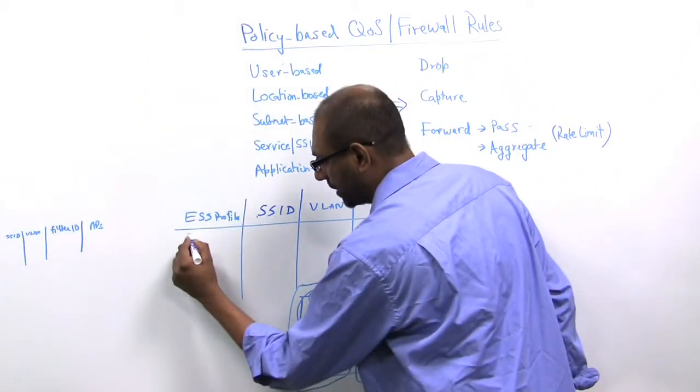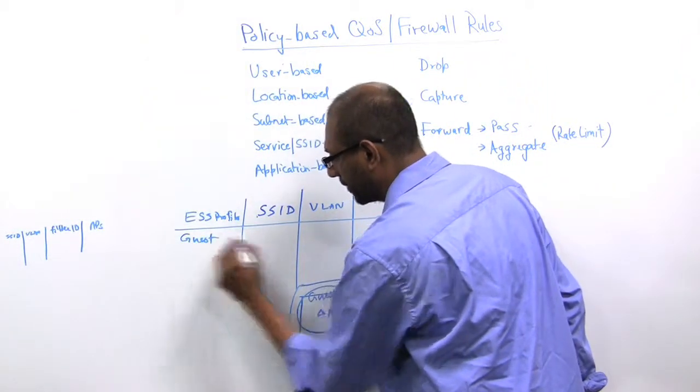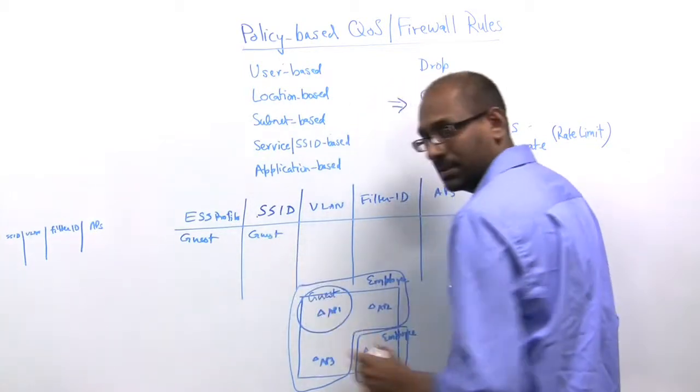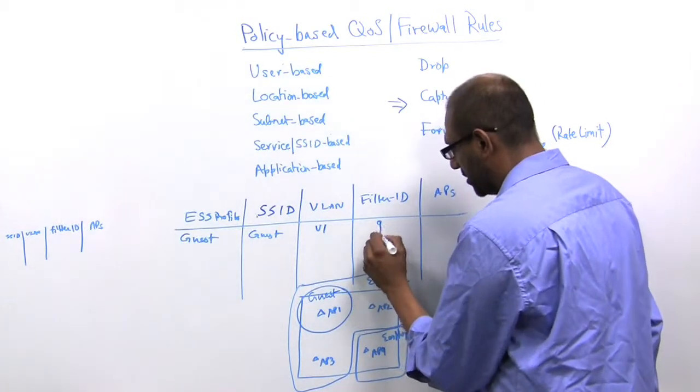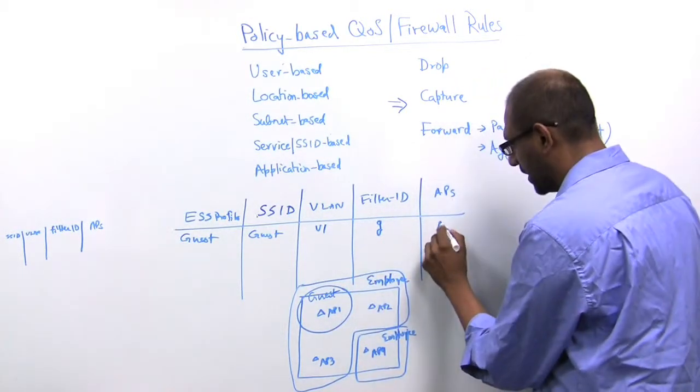So in this particular case, let's call this guest. The advertised SSID is guest, VLAN is V1, filter ID is G, and in this particular case, the APs are AP1.